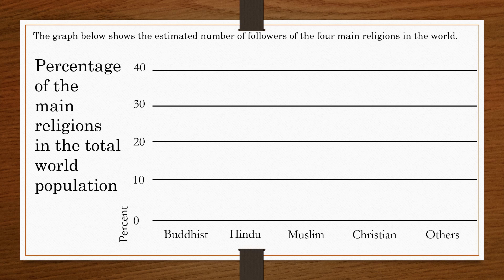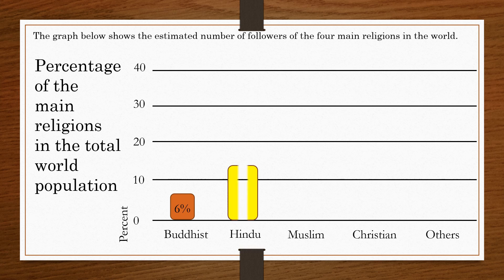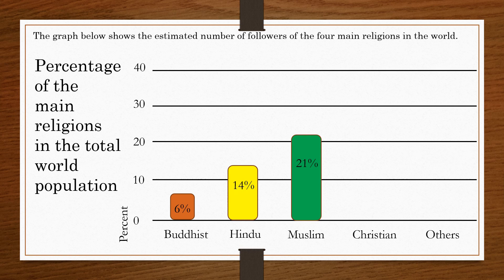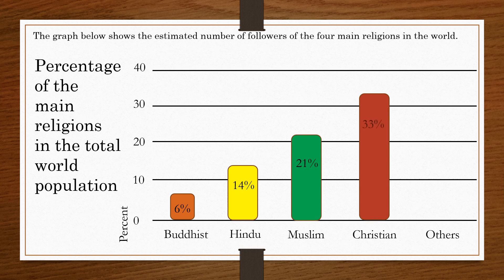According to a couple of decades of research: Buddhists are 6 percent, Hindus are 14 percent, Muslims are 21 percent, Christians are 33 percent, and others are 23 percent.